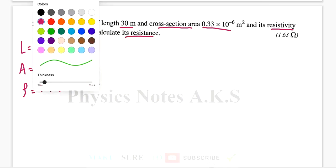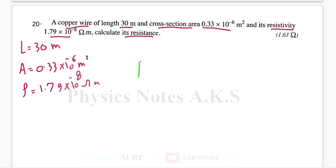As you can see, it's a simple question. R equals rho L over A. Simply, I substitute the numbers: rho is 1.79 × 10^-8, multiply the length is 30, the area is 0.33 × 10^-6. I use my calculator, I did it before, it is 1.63 ohm. So, it's a simple substitution in the formula.